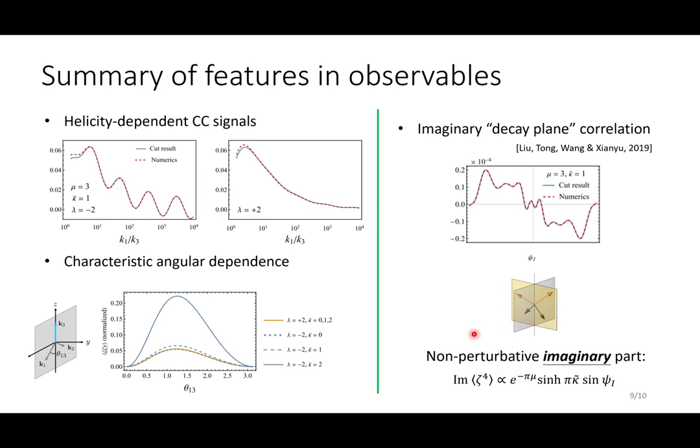So this is very much an analogy with the decay plane correlation in the flat spacetime particle experiments, where you can detect the CP properties of certain scattered fields. And here you see this odd dependence on the dihedral angle. And this is non-perturbatively small because it's proportional to this exponential minus pi mu, which cannot be understood as any sort of large mass EFT expansion. So it's, in this sense, non-perturbative. It only comes from on-shell particle propagation.